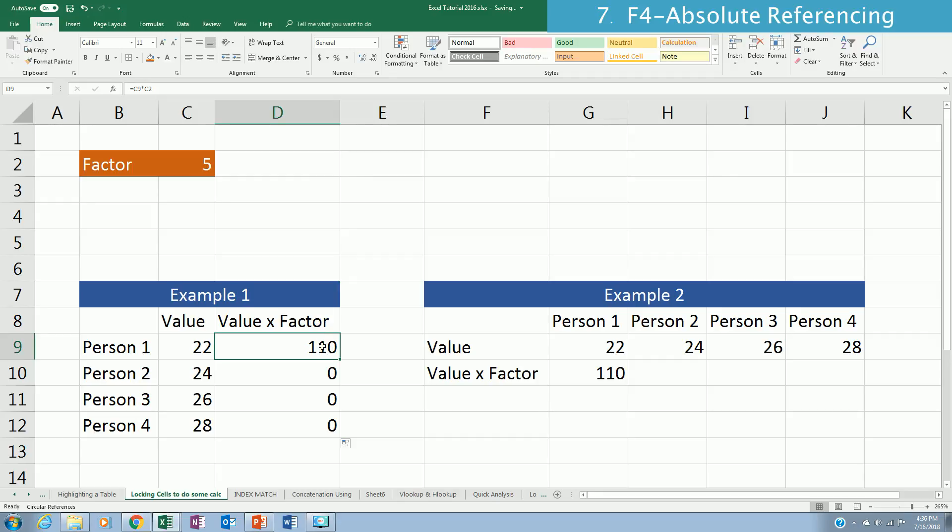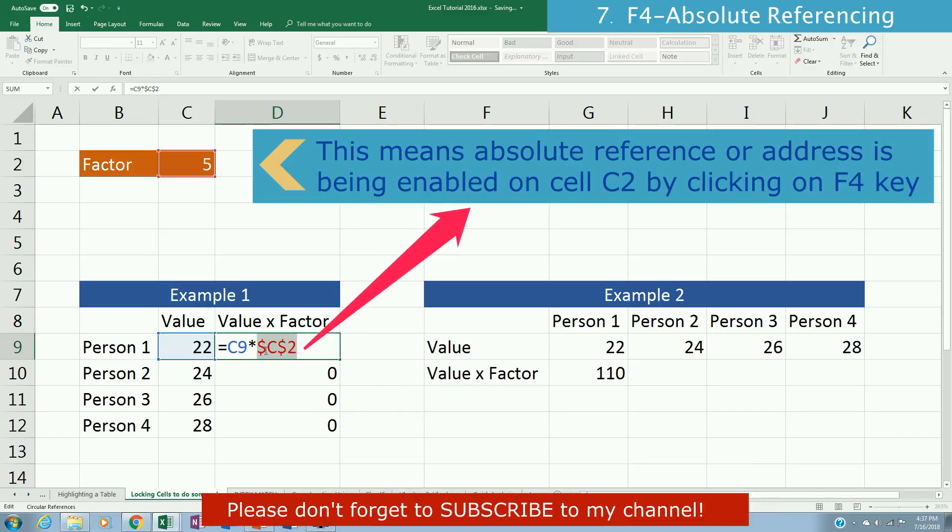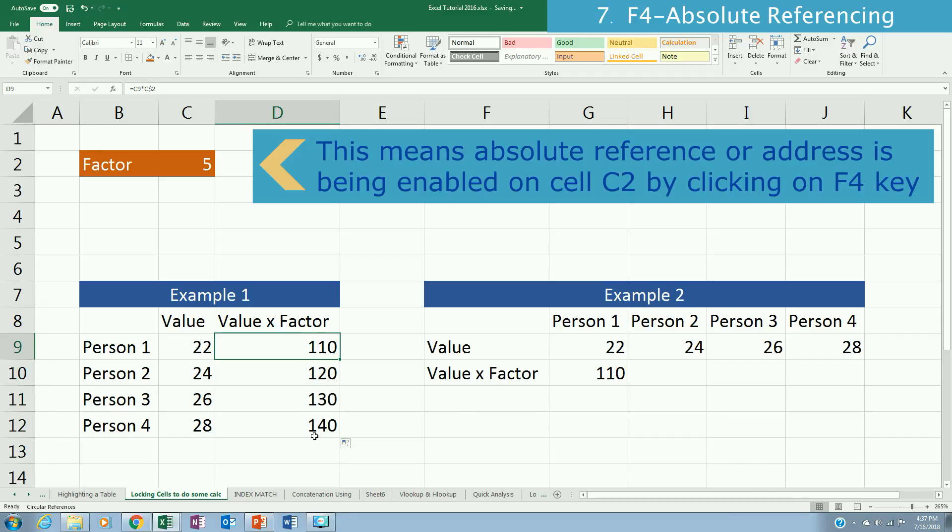So in this case, one way to solve that is if we click on F2 and then click on F4 to make sure that this one here is fixing both columns and rows. You can do that one but in this case, I would like just to fix the row. This one is fixing the row. So if you enter that one and then copy it down to the next rows, you will see that it has already fixed the calculation.